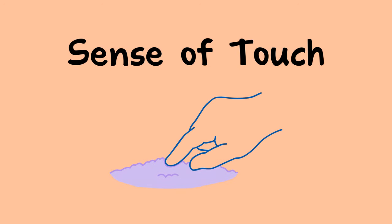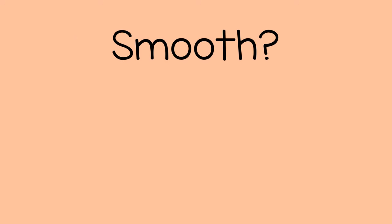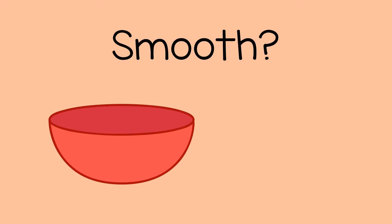You can help a child explore their sense of touch by asking them to find things with different textures. For example, you might ask, can you find something that's smooth? And the child can find something like a bowl or a leaf.